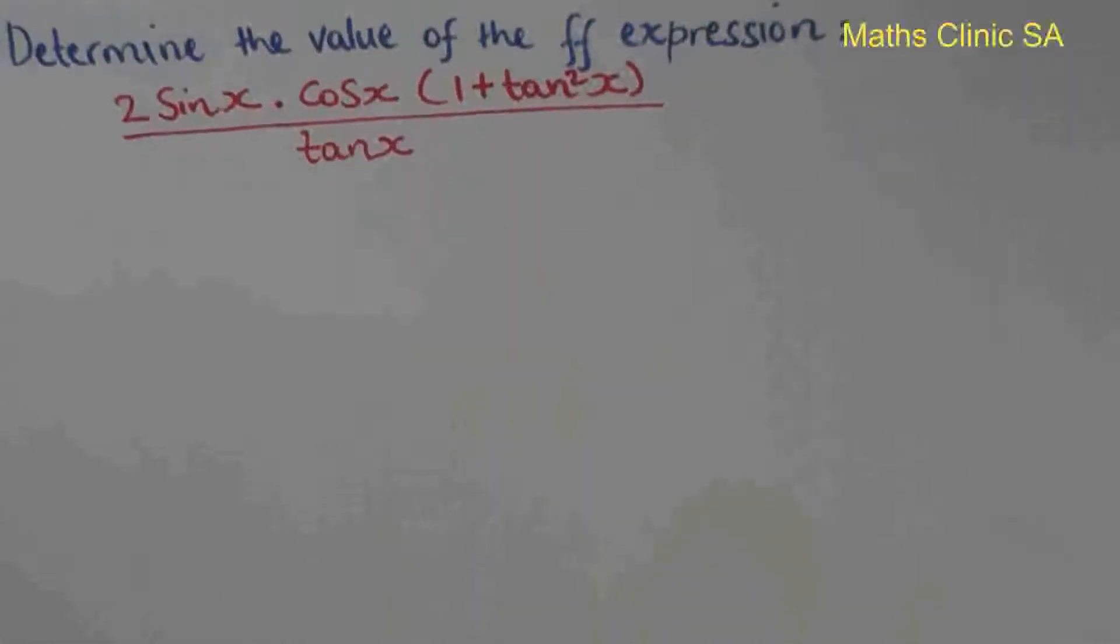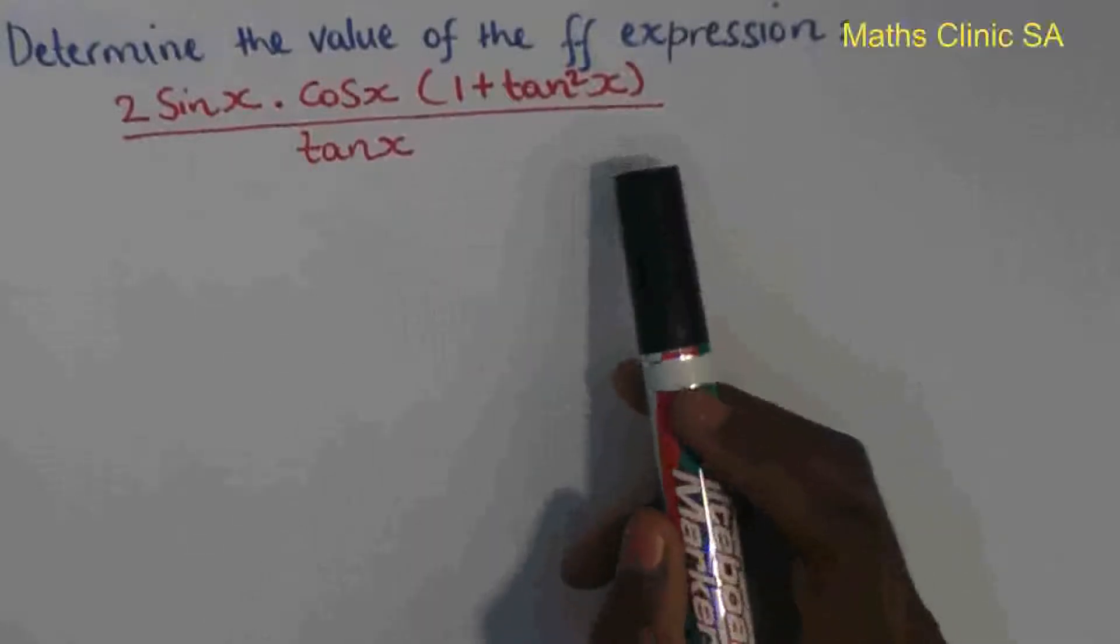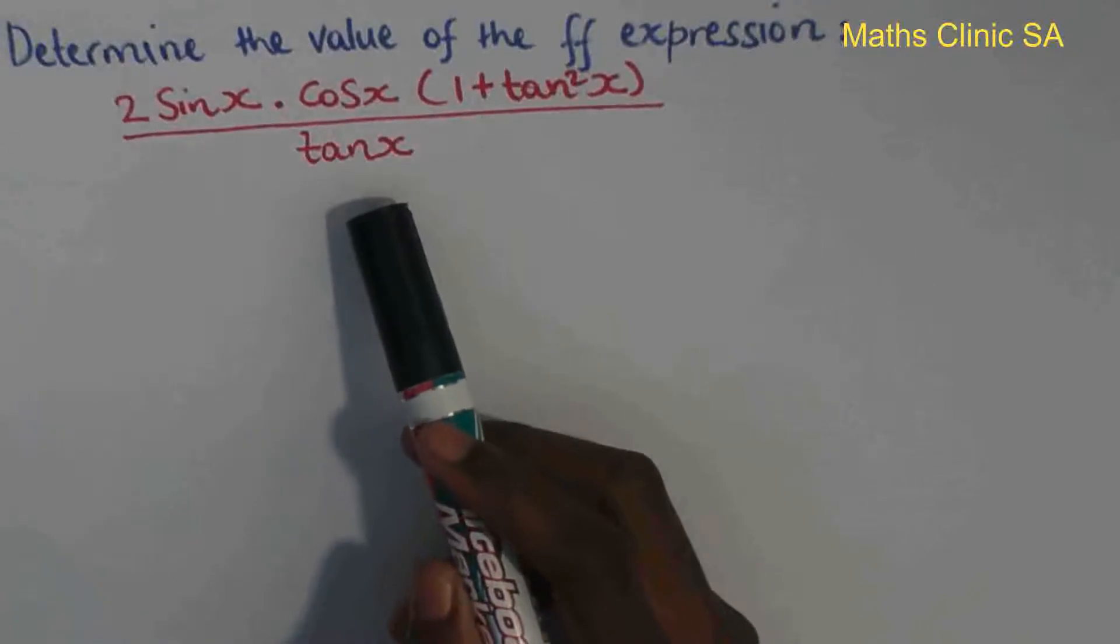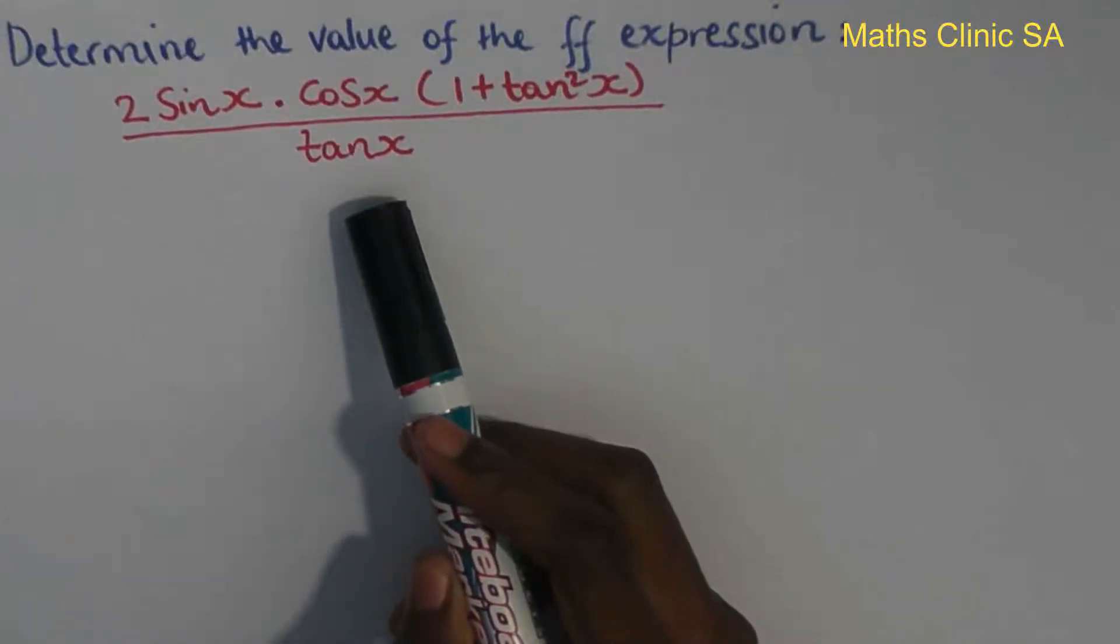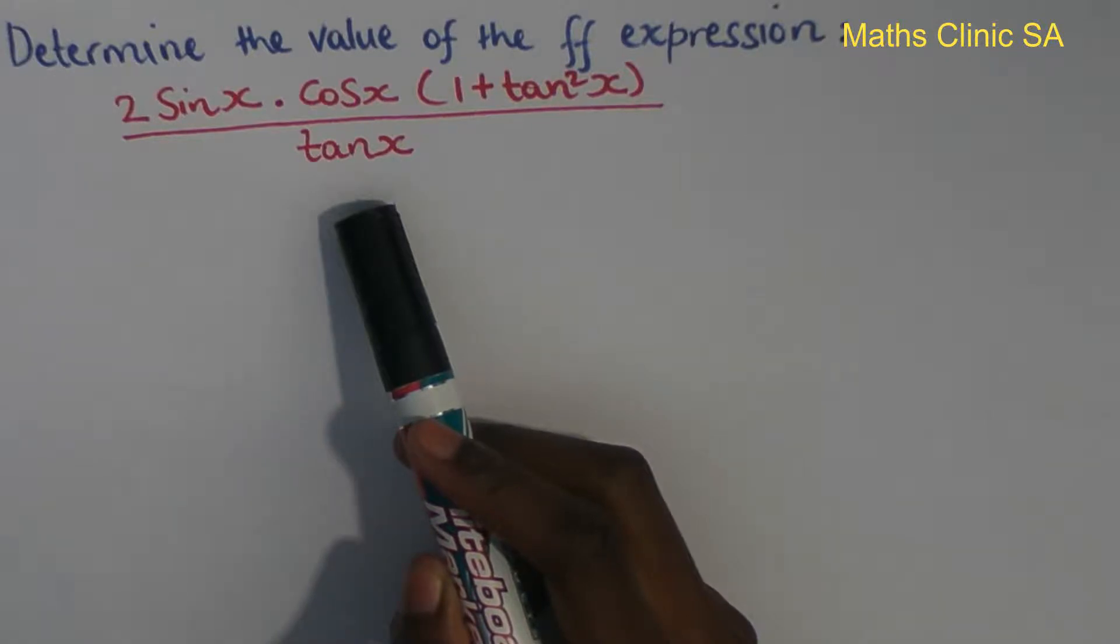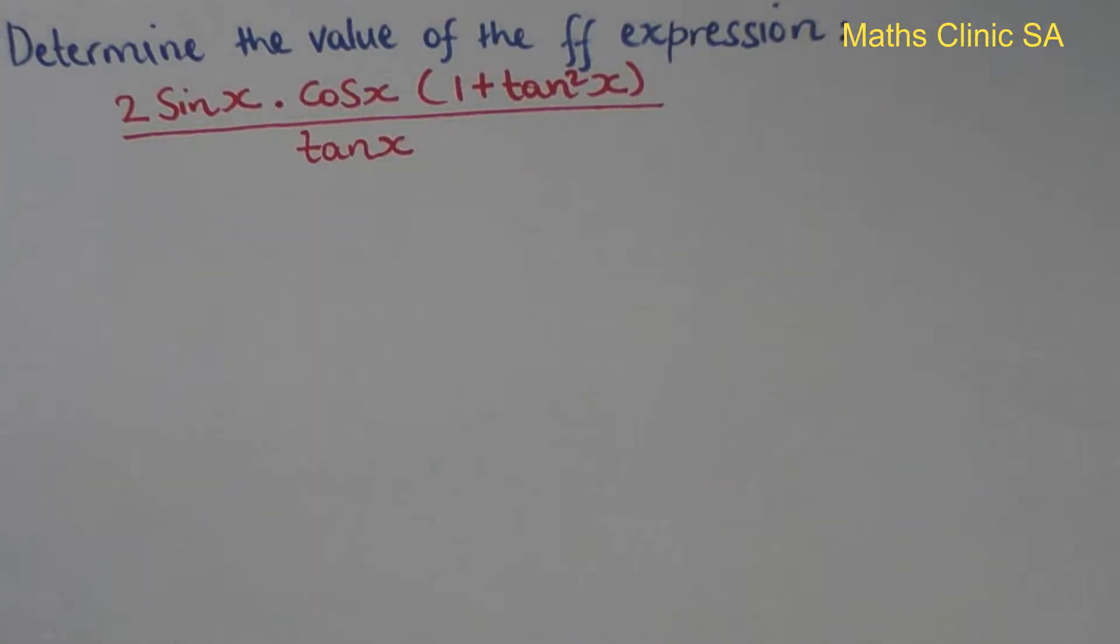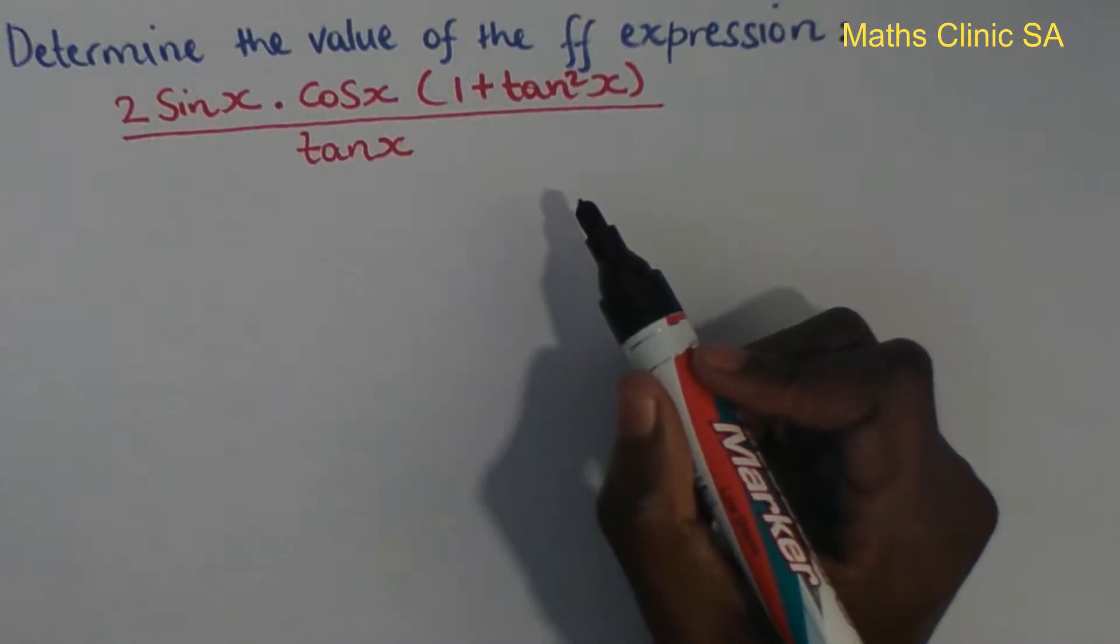Determine the value of the following expression: 2 sine x times cos x, in brackets one plus tan squared x, divided by tan x. So in this we need to use the identities, and that's the sine and cosine identities and tan identities. Now let me make some changes and write it in terms of sine and cosine.